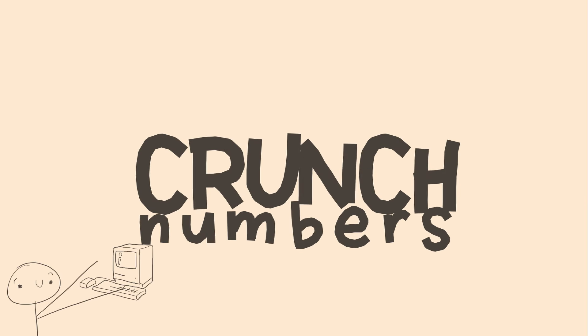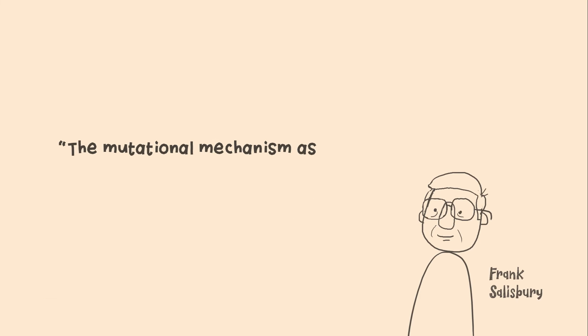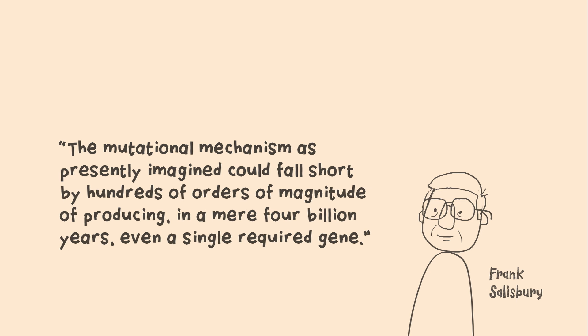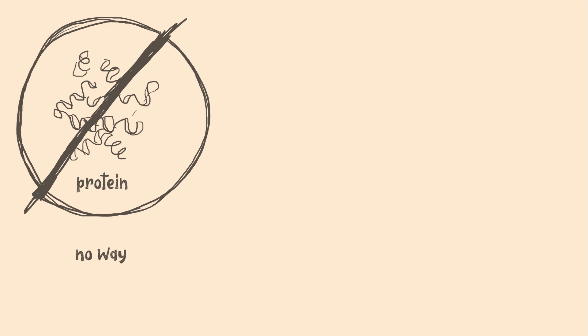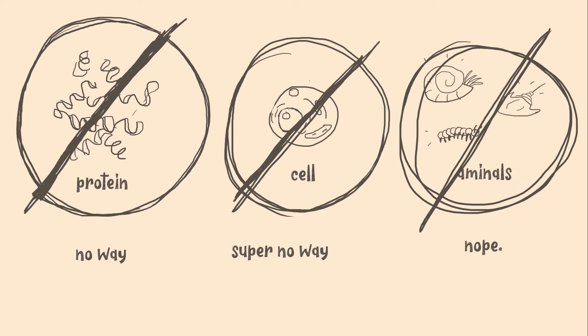So these nerds did what they do best, they crunched the numbers and the results were tentative, but they didn't look good for the biologists. The mutational mechanism, as presently imagined, could fall short by hundreds of orders of magnitude, of producing in a mere 4 billion years even a single required gene. They couldn't get the numbers to work for even the simplest building blocks of life, much less the whole animals that appeared in the Cambrian.